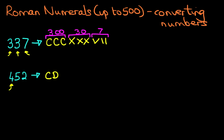Just make a note of that. That is 100 before, or you can say less than 500. D is 500, C is 100. So it's 100 less than 500, which is 400. So C, D is 400.